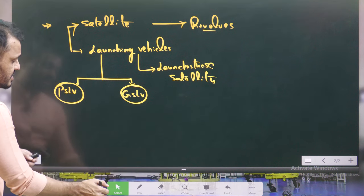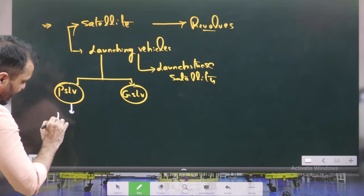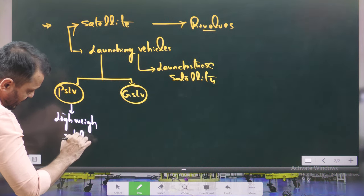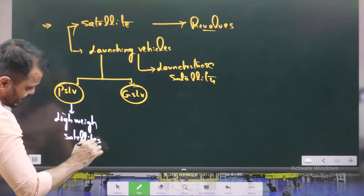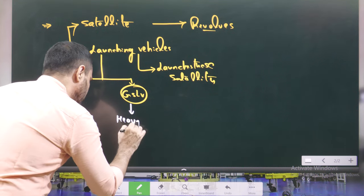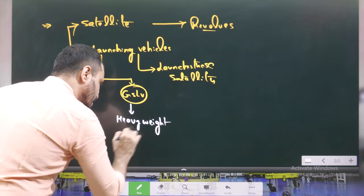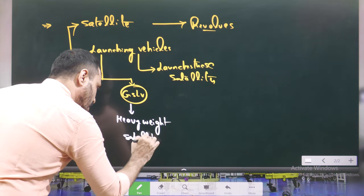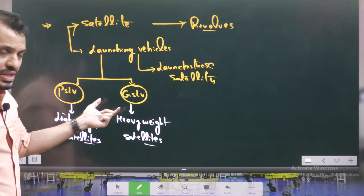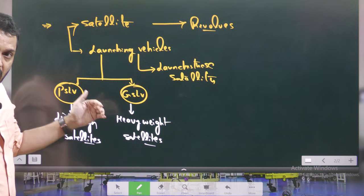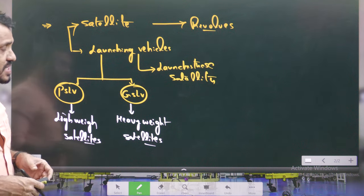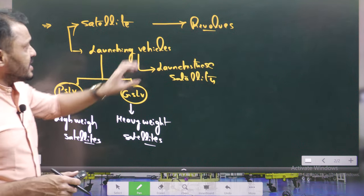PSLV vehicles are used for lightweight satellites. If the satellite weight is lighter, then PSLV will be used. GSLV is used for heavyweight satellites. Now you know the difference between PSLV and GSLV — mainly the launch weight. Apart from that, the different stages and fuel types are also different in PSLV as well as GSLV.